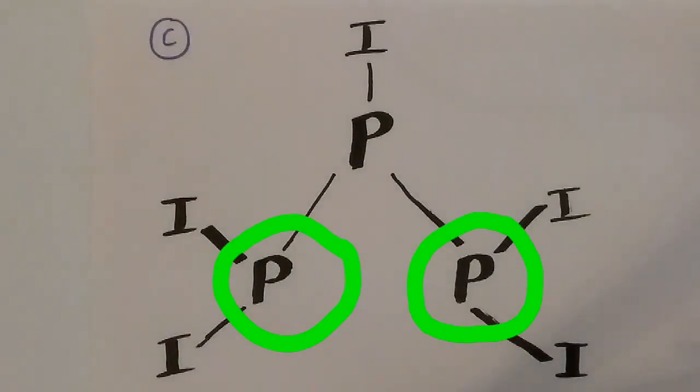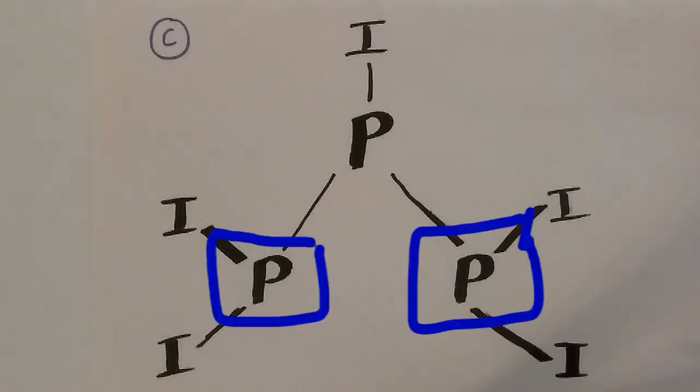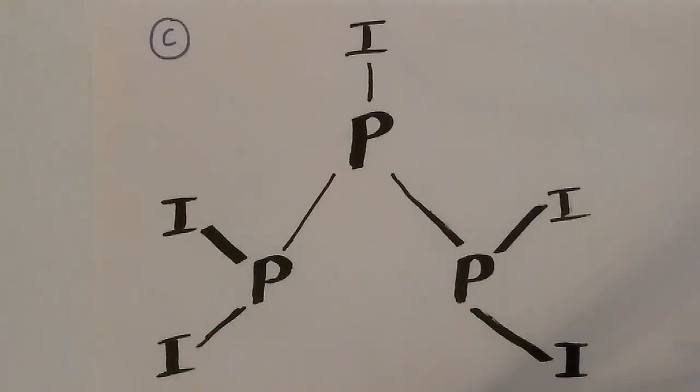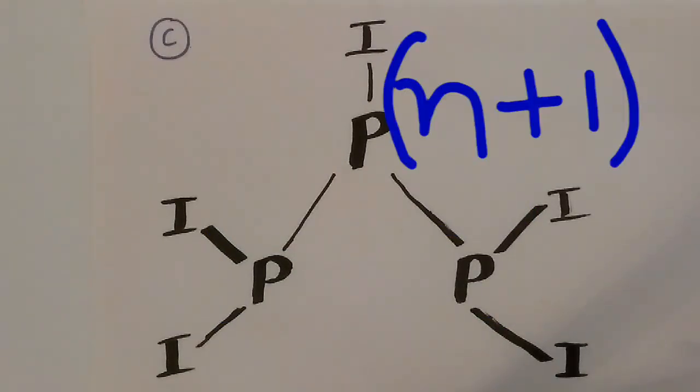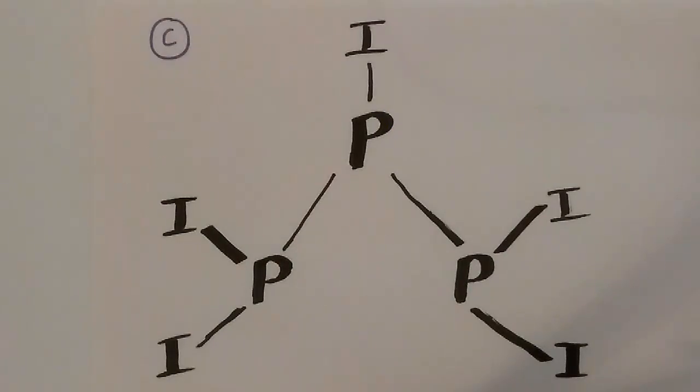These phosphorus will give a doublet because of the presence of this single phosphorus. This phosphorus will give a triplet because of these two phosphorus in accordance with the n plus 1 rule. So, option C is the correct choice.